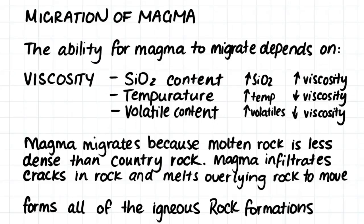The last thing that will decide what sort of igneous rock will form is how the magma will migrate through the crust. The ability for magma to migrate depends on its viscosity, and its viscosity depends on its silica content, temperature, and volatile content. When there is more silica, the viscosity of the magma will increase; however, when the temperature and volatile content is greater, the viscosity will decrease. Magma migrates because molten rock is less dense than country rock, and it infiltrates cracks in the rock and melts overlying rock to move upwards.